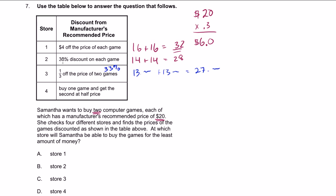And then the fourth one, buy one game and get the second at half price. So here, she's going to spend $20 on the first game. And then the second one is going to be half price. So she's going to spend a total of $30.